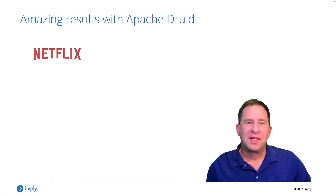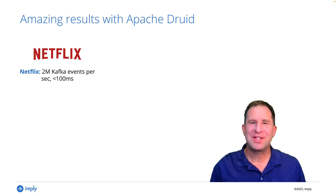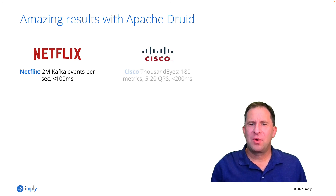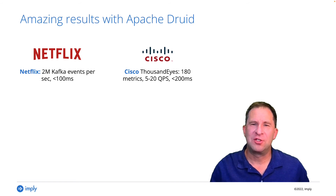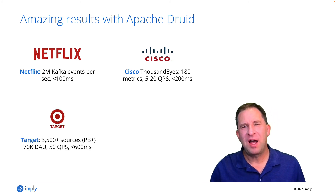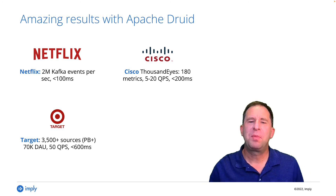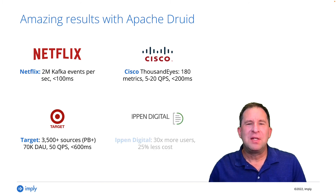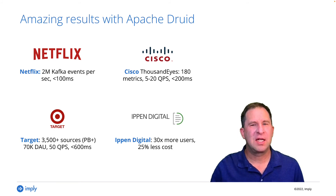Is there a database that can do all three of these essentials? Yes — Apache Druid. Here are some proof points. Netflix analyzes more than 2 million events per second coming in on Kafka streams; each query happens in less than a tenth of a second. Cisco's ThousandEyes application serves 180 metrics and 20 queries per second, each of them less than two-tenths of a second on average. Target uses Druid to analyze over 3,500 streaming and batch data sources for over 70,000 daily average users; their peak queries per second is 50, each less than six-tenths of a second on average. And IPN Digital increased their concurrency 30 times with Druid, yet saved 25% compared to their old system.